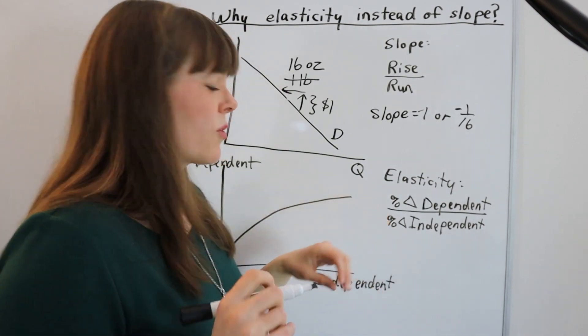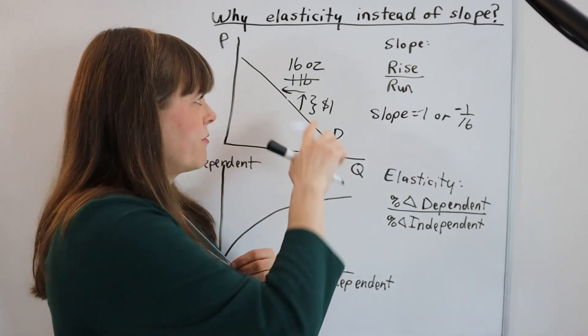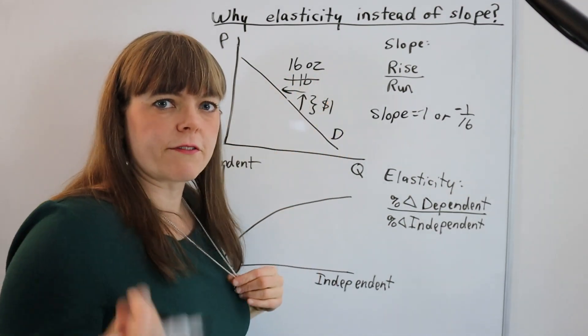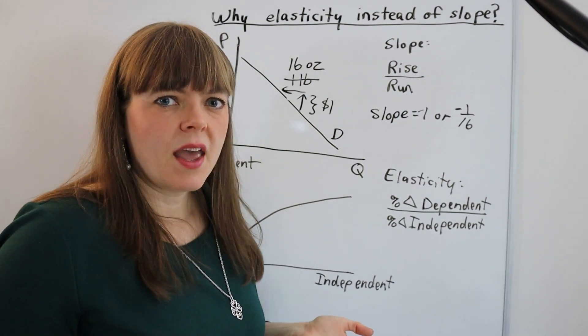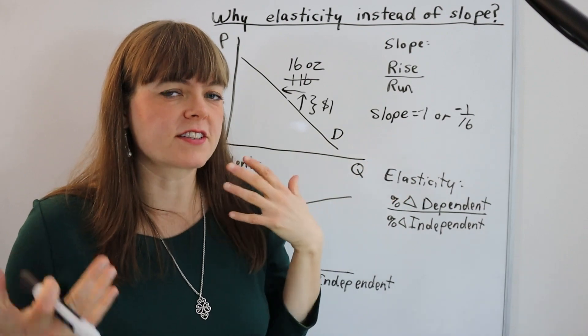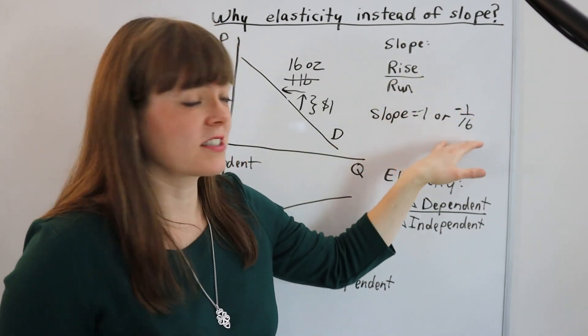So this is actually going to get at something else that we care about. Is it a really big response if people are buying one pound fewer or a really small response? And there's actually not enough context up here for us to tell, or at least there's not enough context based on just the slope.